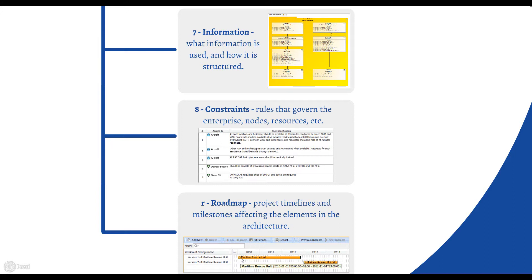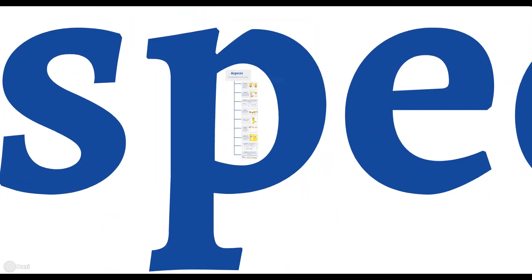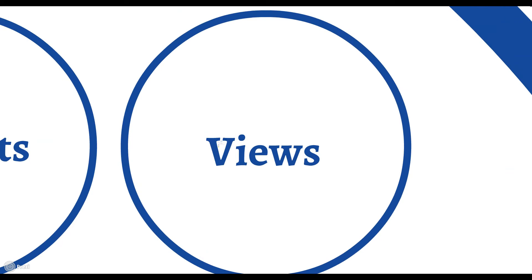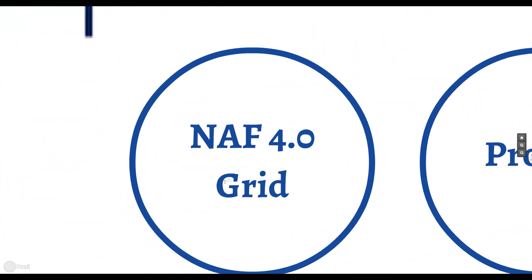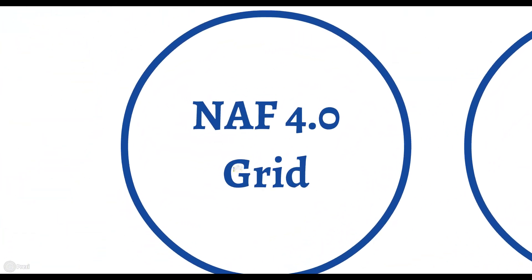Roadmap shows project timelines and milestones affecting the elements in the architecture. NAF 4 views — each view contains different information. A view is an intersection of the viewpoint and aspect, like coordinates. For example, capability taxonomy view is C1.